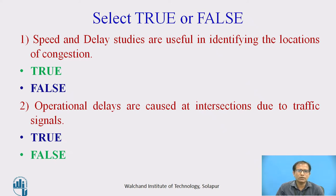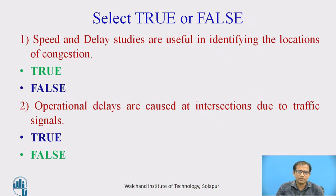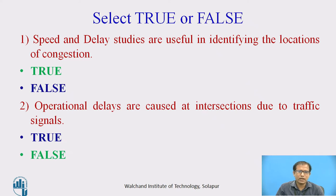The interference may occur while a vehicle is on the road and turning — due to turning, through traffic may face delays. Also, while parking or un-parking a vehicle you may face congestion. A lesser road width or any accident can also cause congestion. At intersections, we have fixed delays.